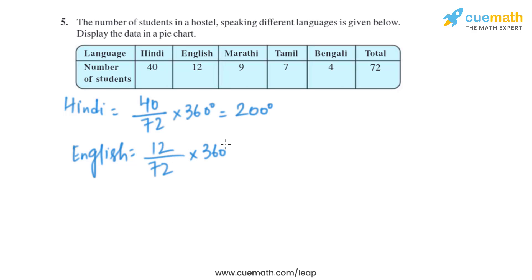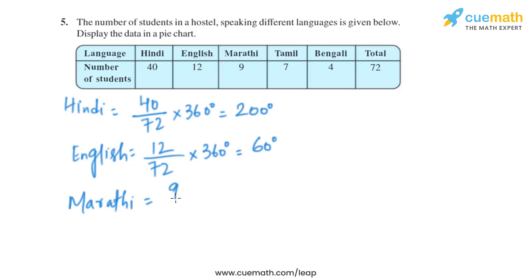Now let's move on to English. For English, it is 12 divided by 72, multiplied by 360 degrees, and on solving this we get 60 degrees as the central angle. For Marathi, there are 9 people out of 72, multiplied by 360 degrees, giving us 45 degrees.